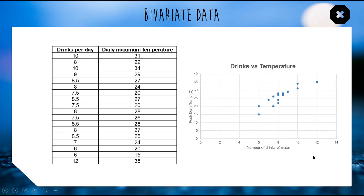I plotted all these data points as coordinates where my x-axis is my number of drinks and my y-axis is my peak daily temperature. As you can see I wasn't crazy — there is a trend, and you can even put a trend line on your scatter plot.